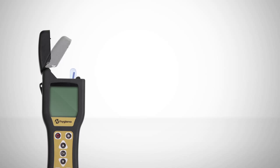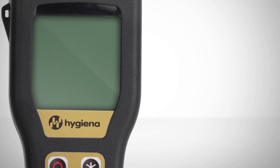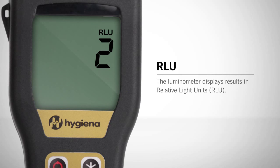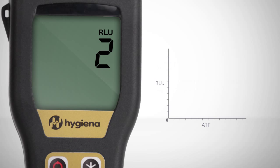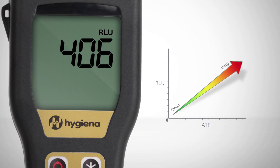Test results are delivered in 15 seconds and are expressed in relative light units, or RLUs. An RLU result is directly proportional to the amount of ATP collected from the sample. So the greater the amount of ATP, the greater the RLU number, and the dirtier the surface.